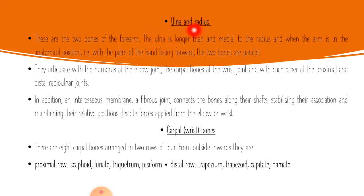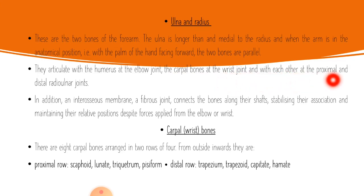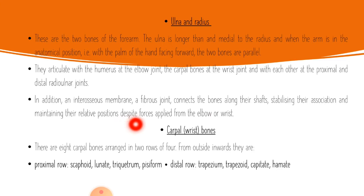Now we will talk about the radius and the ulna — the two bones of the forearm. The ulna is longer than the radius and lies medial to the radius. When the arm is in anatomical position, with the palm of the hand facing forward, the two bones are parallel. They articulate with the humerus at the elbow joint, with the carpal bones at the wrist joint, and with each other at the proximal and distal radioulnar joints. An interosseous membrane, a fibrous joint, connects the bones along their shafts, stabilizing their association.